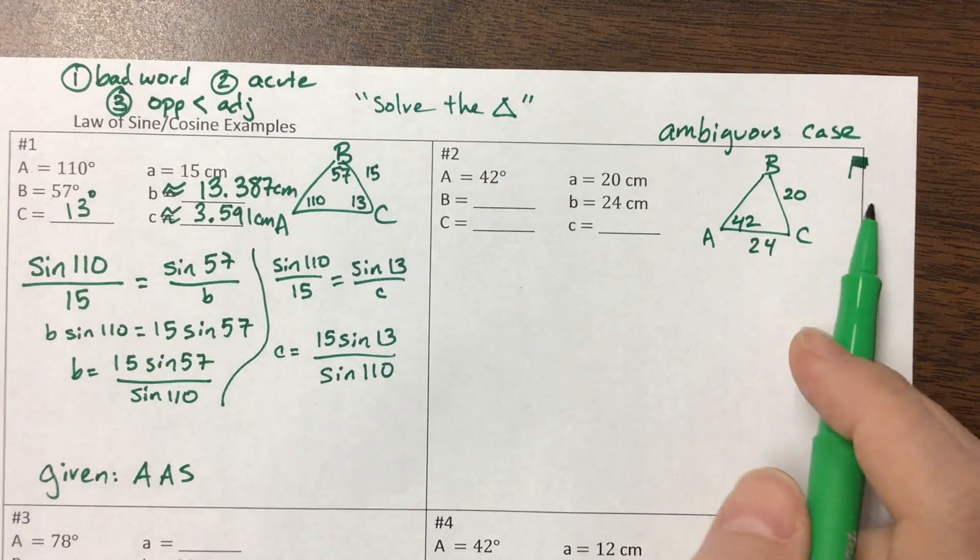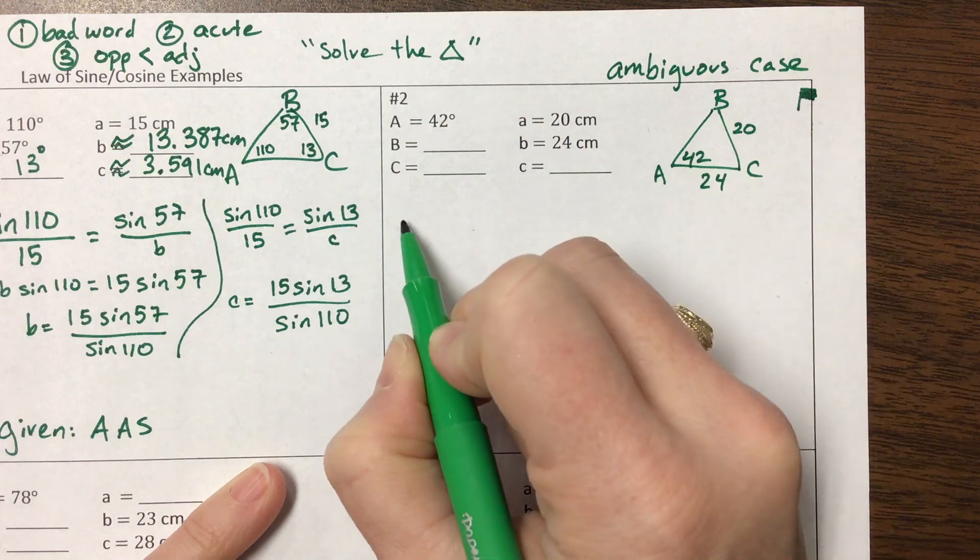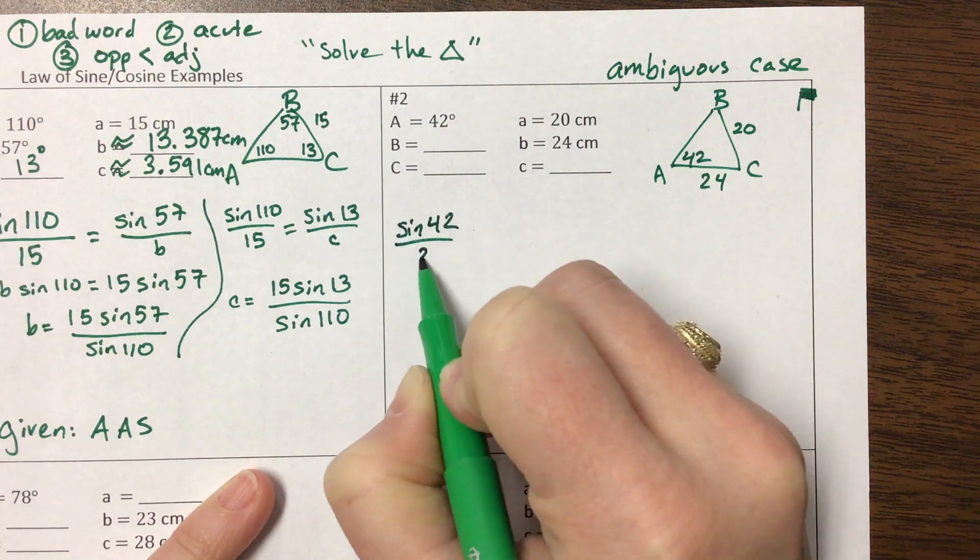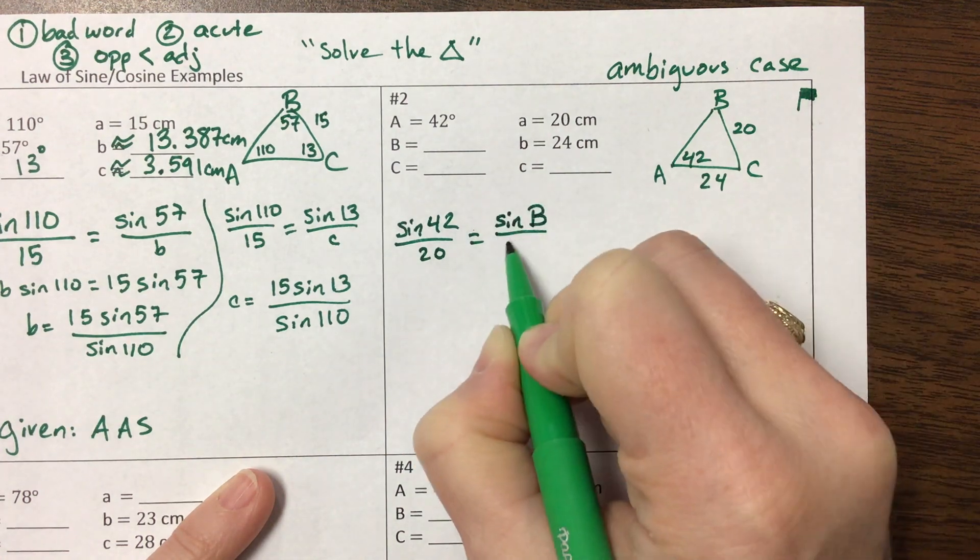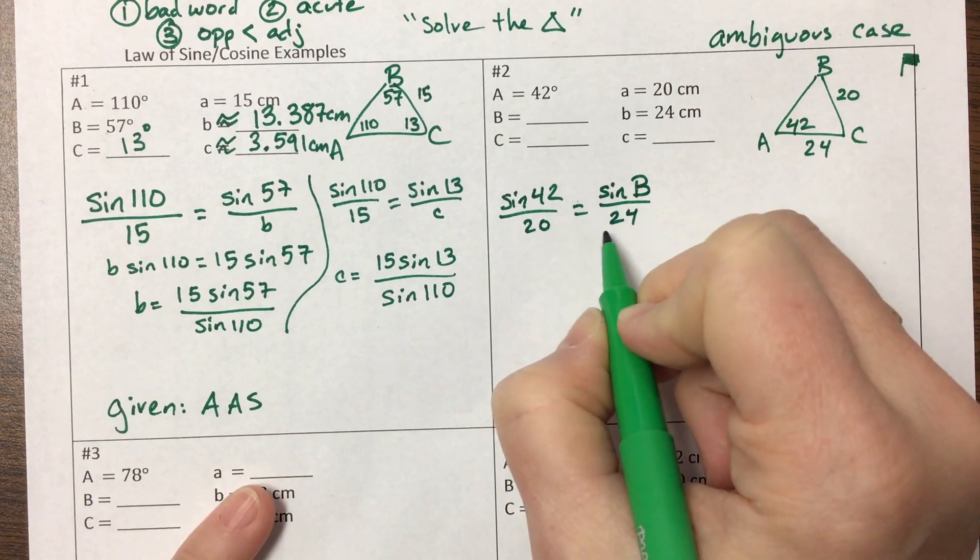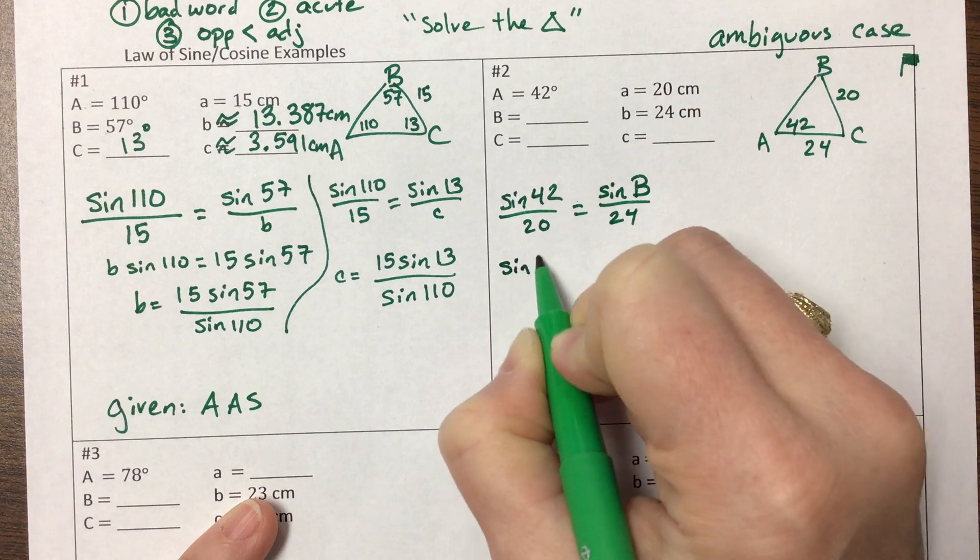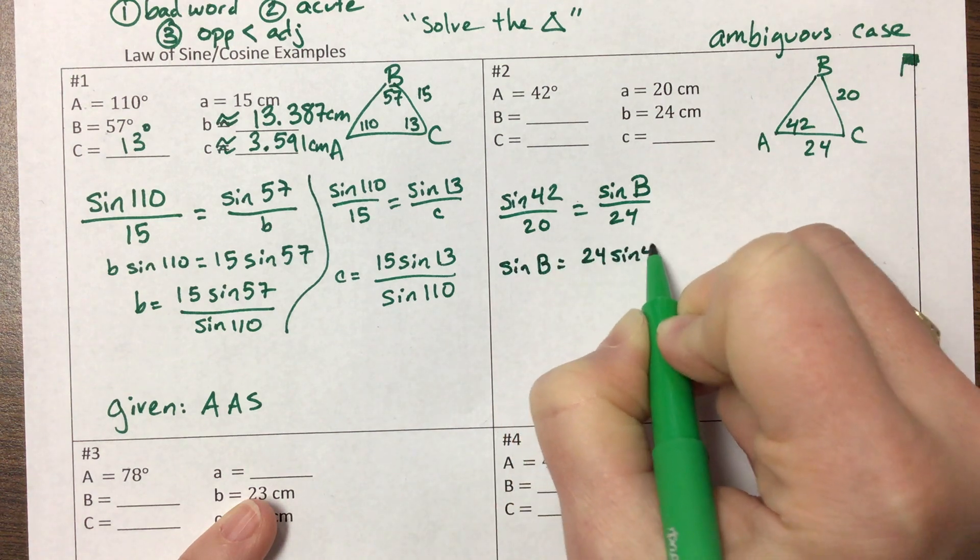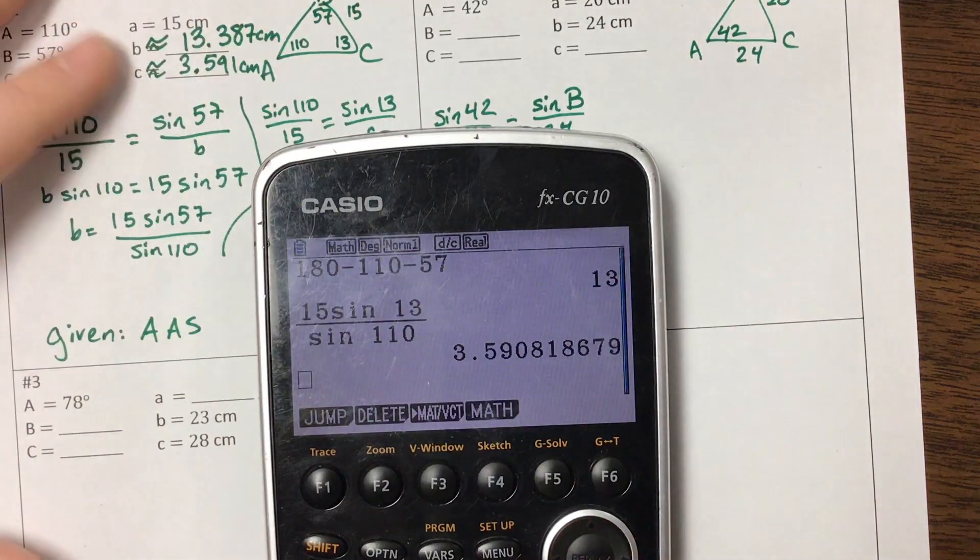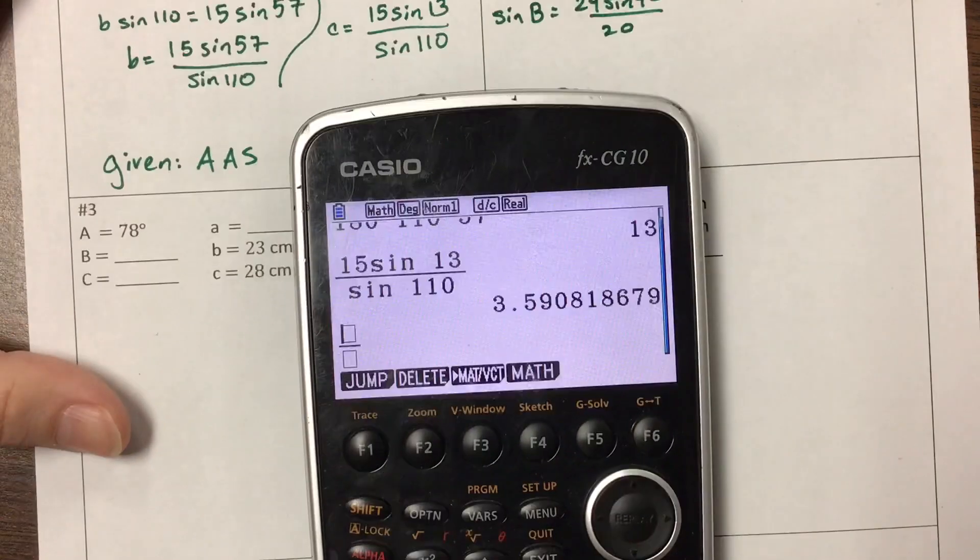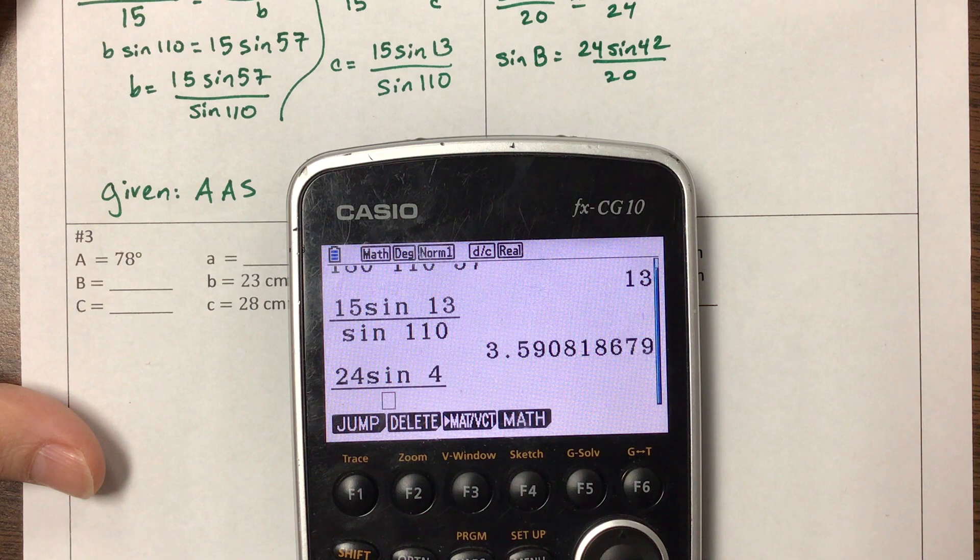So check my ambiguous case video if that doesn't make sense. So in this one, here we go. Now, so we're going to pay attention, we're going to be careful. It's either going to give us zero or two. So I'm going to come along and set it up. Sine of A over a is equal to sine of B over b. Okay, so then I have that sine of, and basically I just need to multiply both sides by 24. So sine of B is equal to 24 sine of 42 all over 20.